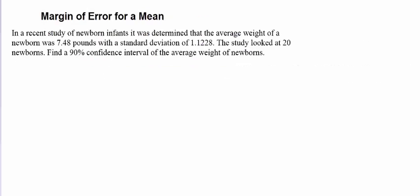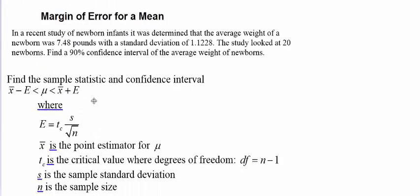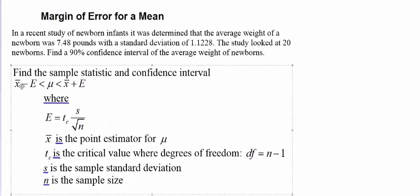So let's take a look at the formula. Once again, we're going to add and subtract our margin of error from our sample mean—in this case, that would be 7.48—to construct a confidence interval in hopes of capturing the population mean.